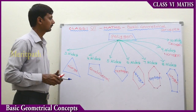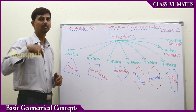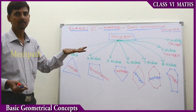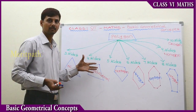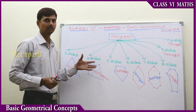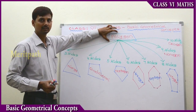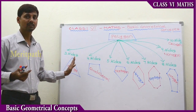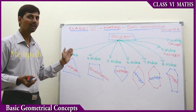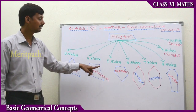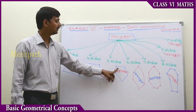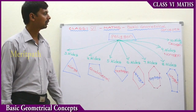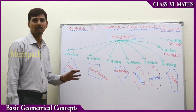So let's recall — a simple closed figure bounded by three or more line segments we call a polygon. Starting with triangle: three sides; quadrilateral: four sides; pentagon: five sides; hexagon: six sides; septagon: seven sides; octagon: eight sides; nonagon: nine sides; decagon: ten sides. These are the types of polygons.